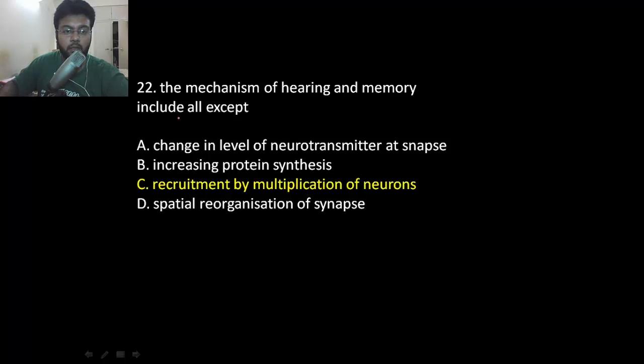The mechanisms of memory include all except: there is change in neurotransmitter at synapse, increased protein synthesis, and reorganization at synapse, but there is no multiplication of neurons. Neurons don't multiply in the central nervous system because they are myelinated by oligodendrocytes.